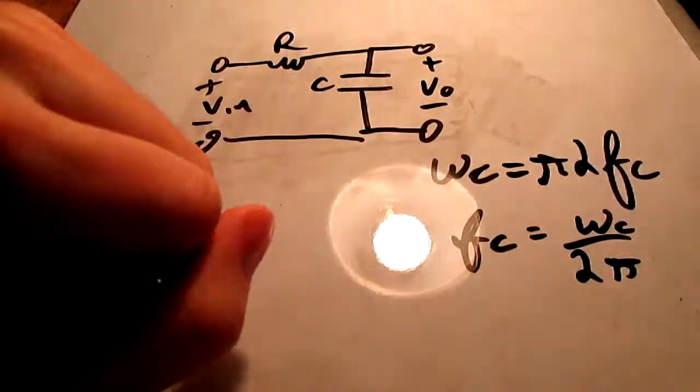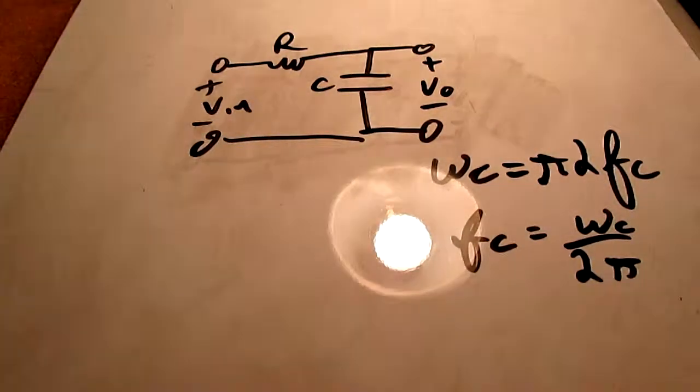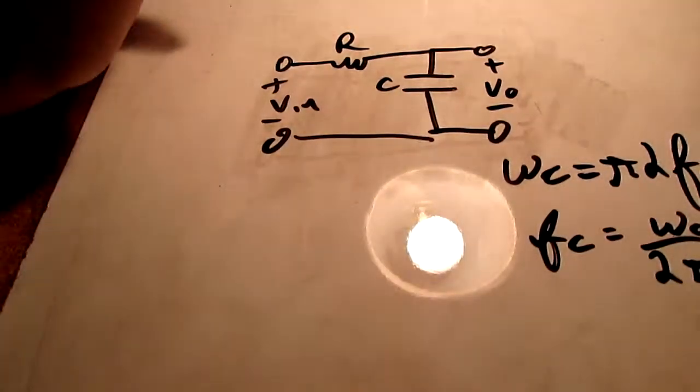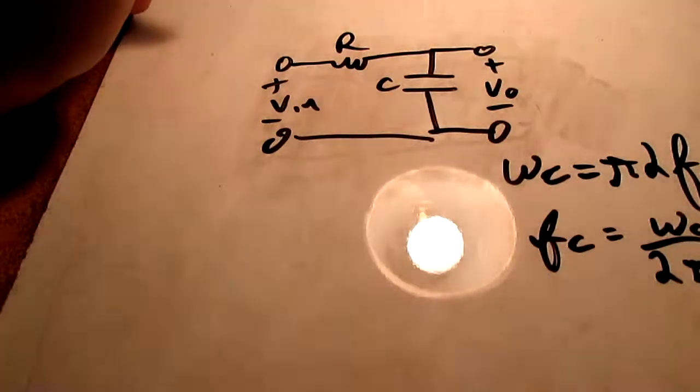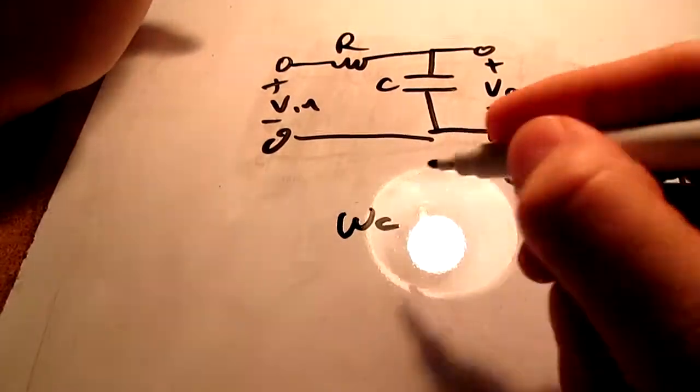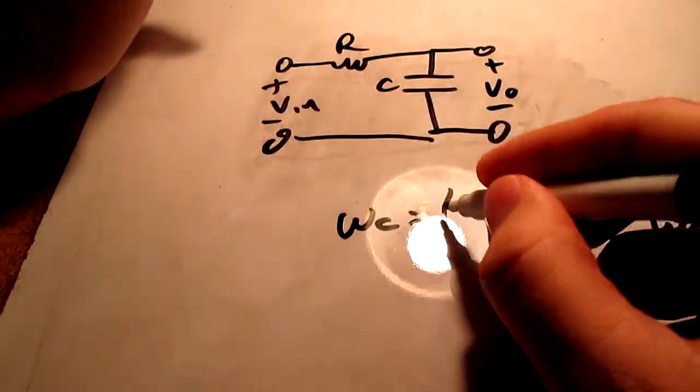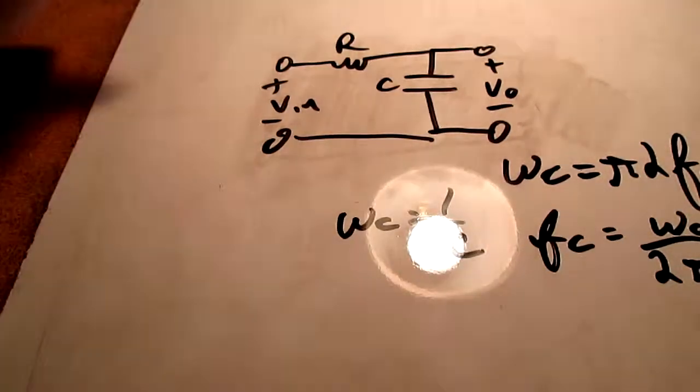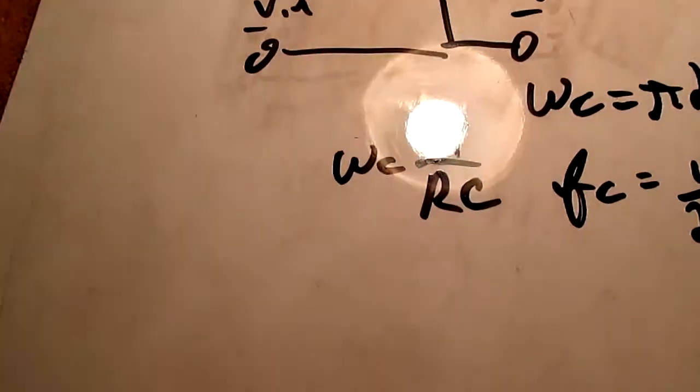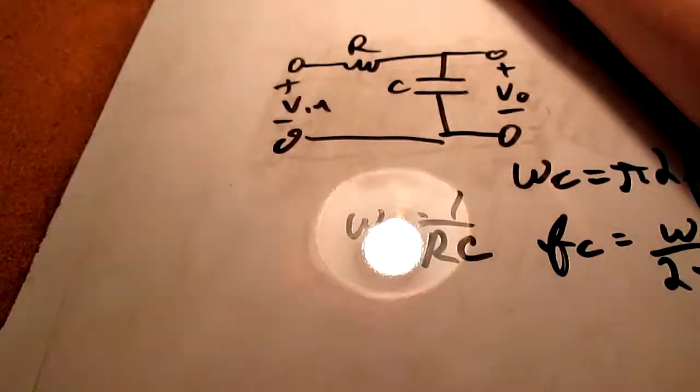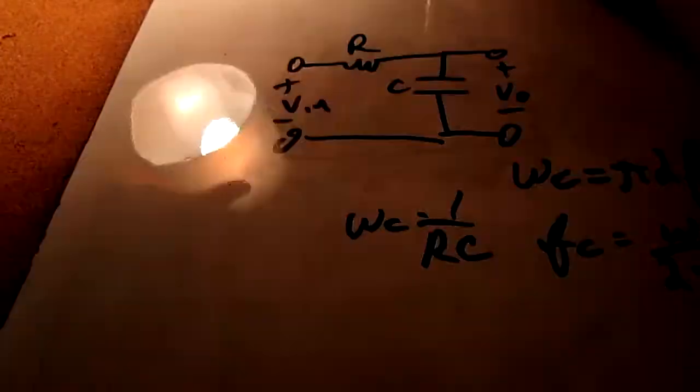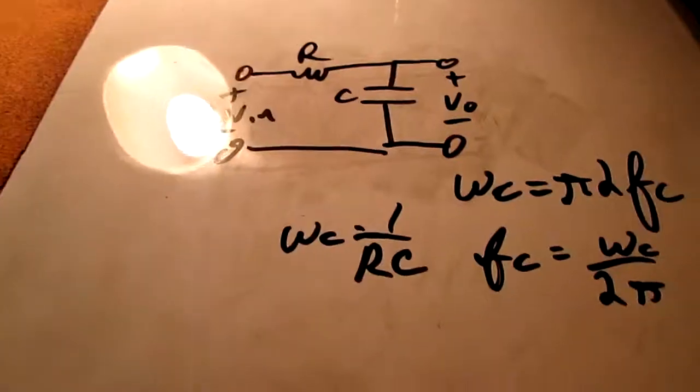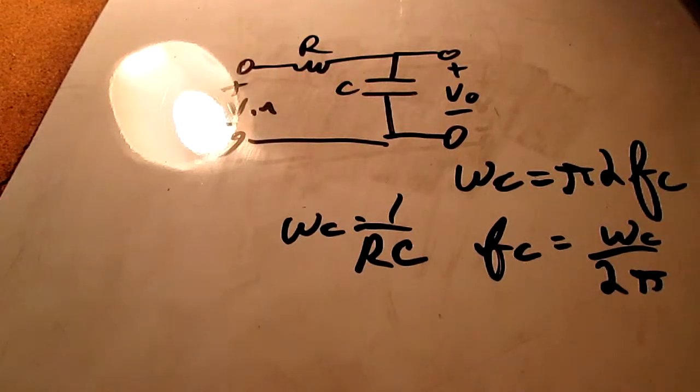So, whenever you're working with filters and you see in a book omega c, that's equal to 1 over rc. And rc is your time constant, your tau.